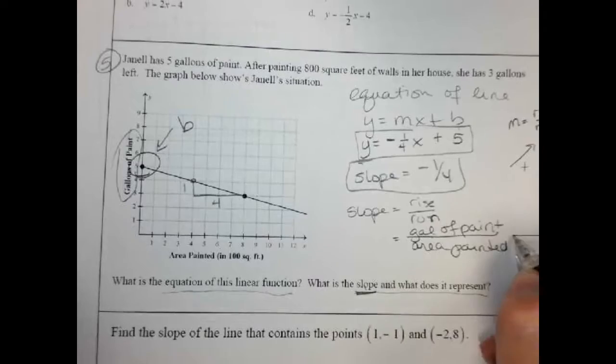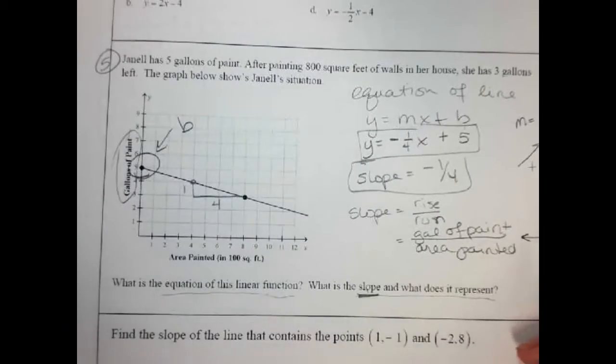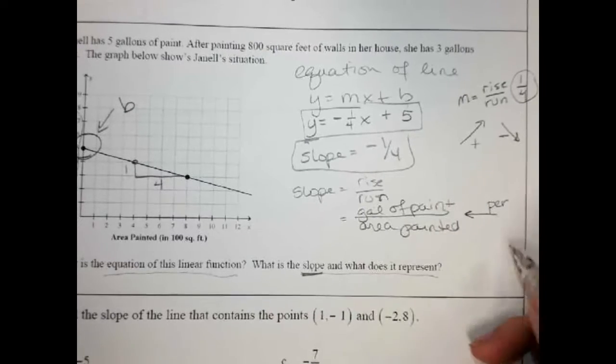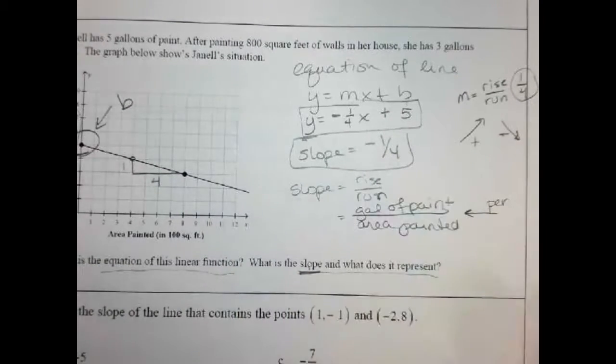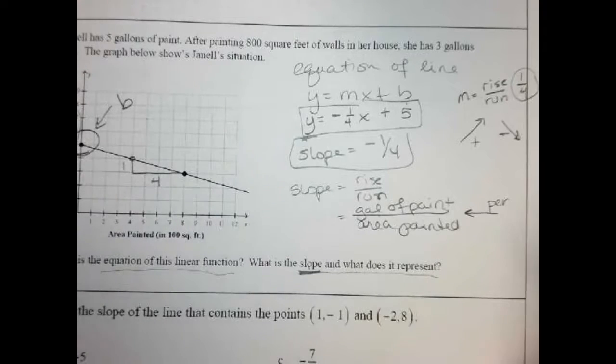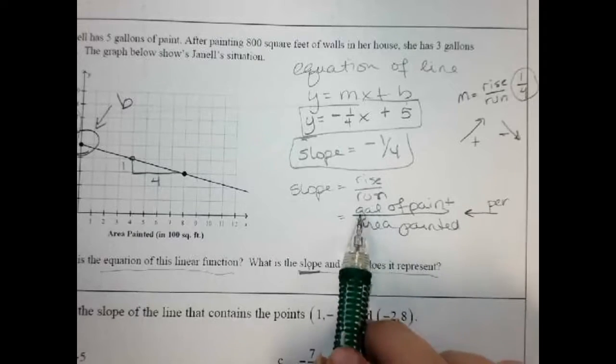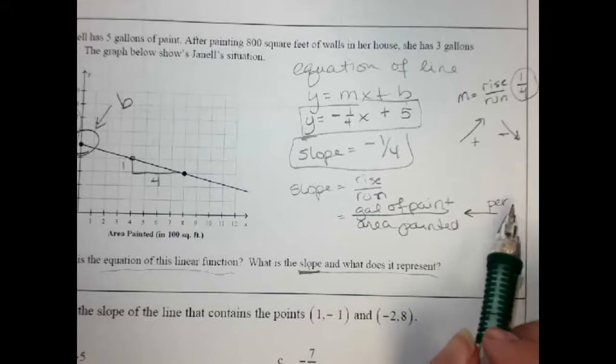And this line right here is really easy. It's just, you say per, like miles per hour, feet per second, right? That's what this line right here. We just say per there. So this is the gallons of paint per area painted.